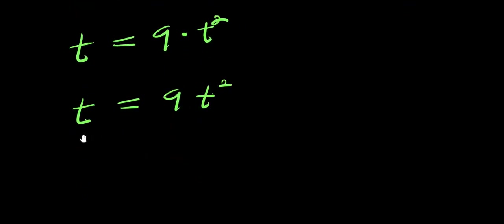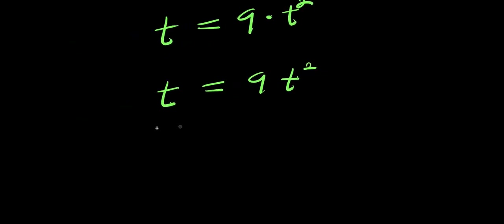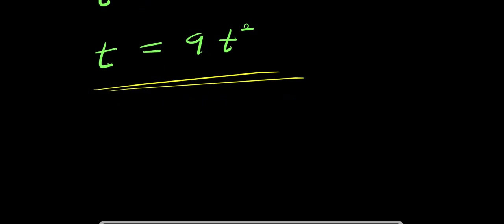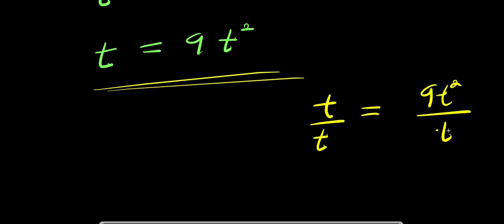This gives us t equals 9t². We can solve this in two ways. One way is to divide both sides by t. If I divide by t, I get t divided by t equals 9t² divided by t.